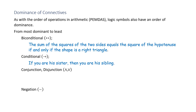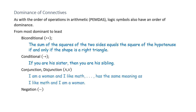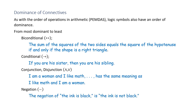After biconditional and conditional, the next dominant connectives are conjunction and disjunction, whichever appears first. Example: 'I am a woman and I like math' has the same meaning as 'I like math and I am a woman' — you can switch the order. And finally, negation: 'the ink is black' negated is 'the ink is not black.' Negation is not necessarily opposite — it just means 'it is not.'